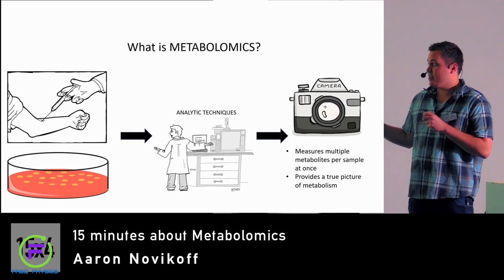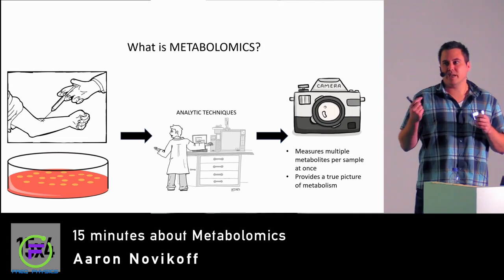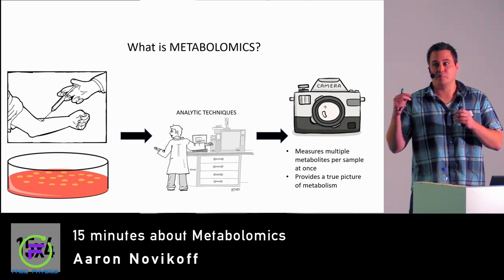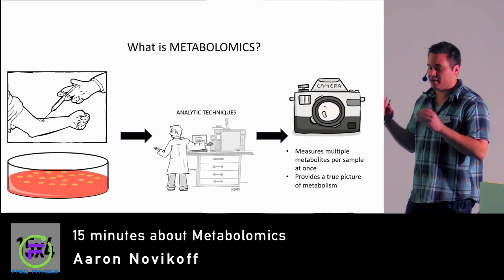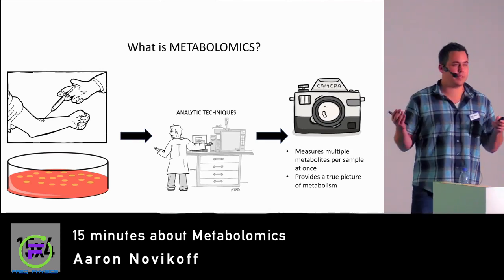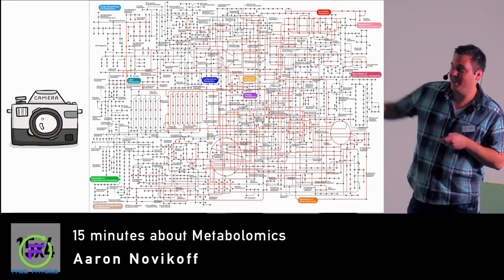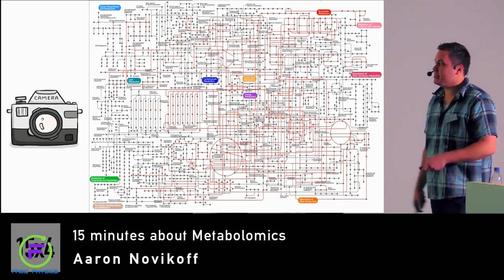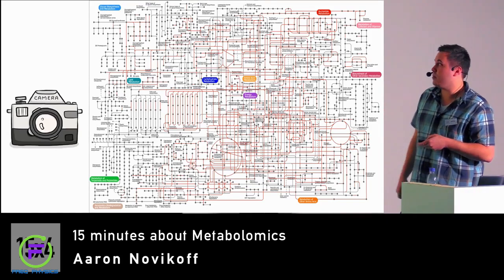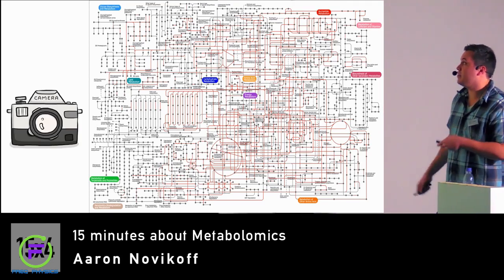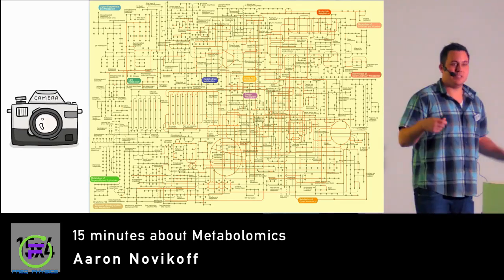What separates metabolomics from other analytic techniques and traditional experiments is that usually we look at maybe one, two, or three metabolites or components of a cell. With metabolomics, we're able to measure multiple metabolites at once, so we're really able to provide a true picture of what metabolism is. This represents metabolomics here — we're able to take pictures of the metabolism and understand what's going on at certain time points by the concentration changes and which metabolites are present.